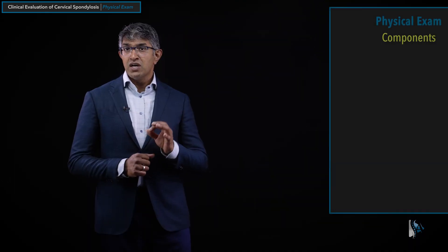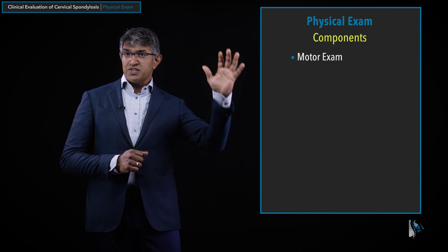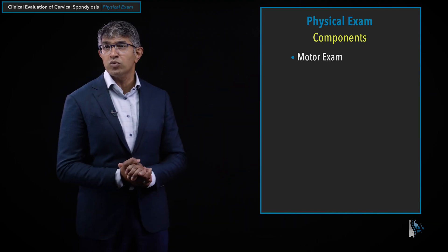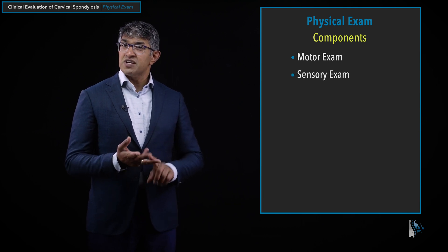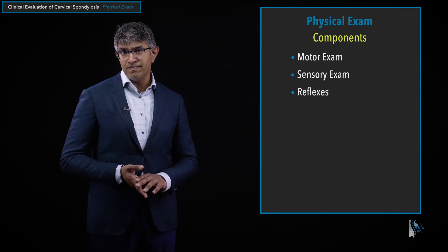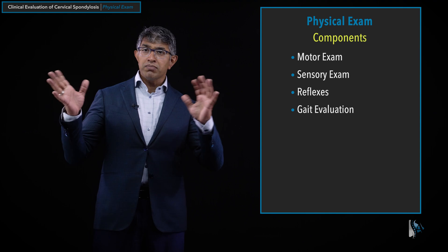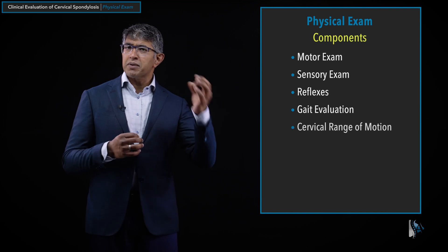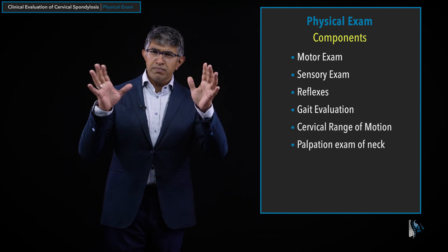After getting a good history, a big part of the evaluation is doing a good physical examination — and I mean neurological examination for a lot of this. We'll talk primarily about the full neurological examination when evaluating a patient with cervical spondylosis. The first component is a motor exam. After that, I will do a sensory exam, then a reflex examination — which is particularly important in spine evaluation — gait evaluation, cervical range of motion, and palpation exam of the neck.